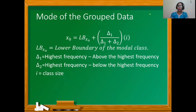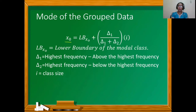Hi everyone, I'm going to discuss the mode of grouped data. In our previous discussion, you learned about calculating the median of grouped data, which had a median class. Similarly, when discussing the mode of grouped data, there will also be a modal class. We denote the formula for the mode as x-sub-zero, where the mode equals the lower boundary of the modal class plus the quantity delta-one over delta-one plus delta-two, times i.